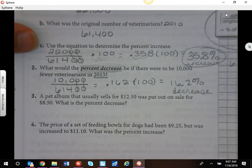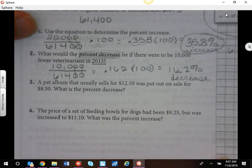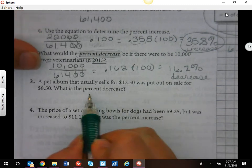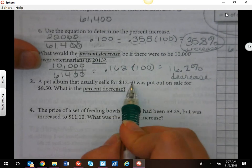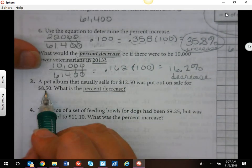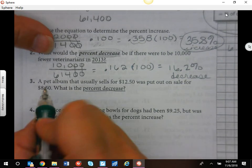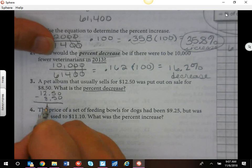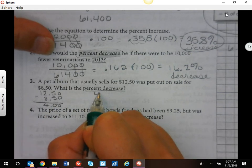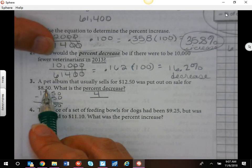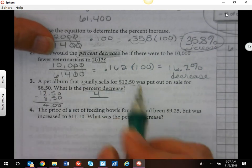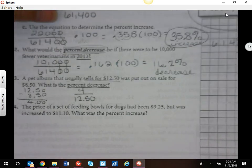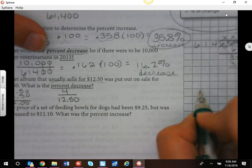A pet album - we can see this with money as well. That was $12.50, put out on sale for $8.50. What is the percent decrease? So again, the difference. I need to subtract these to find out how much the price went down. $12.50 minus $8.50 - most of you can do that in your head - $4. So it went down $4 over the original. Which of these was the original? They usually sell for $12.50.